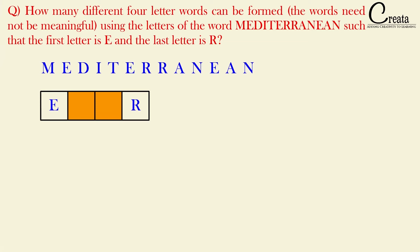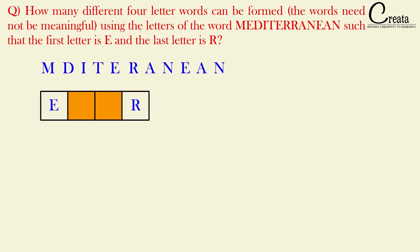From the given word, one E has been used as the first letter and one R has been used as the last letter. So we are left with only 11 letters to fill the two vacant spaces. This is the condition given in the question.